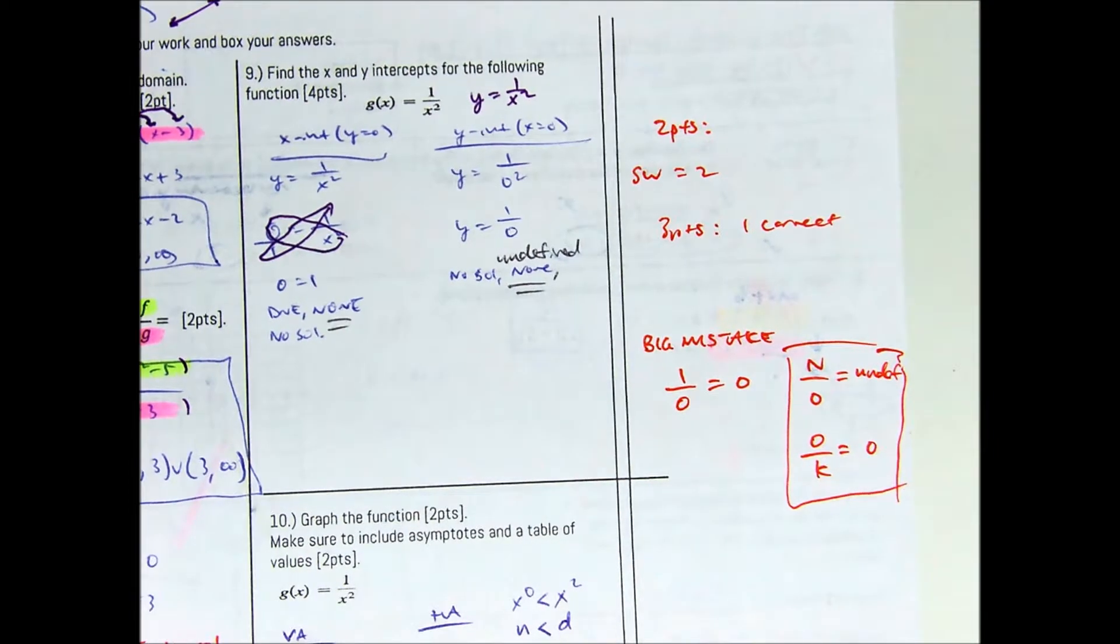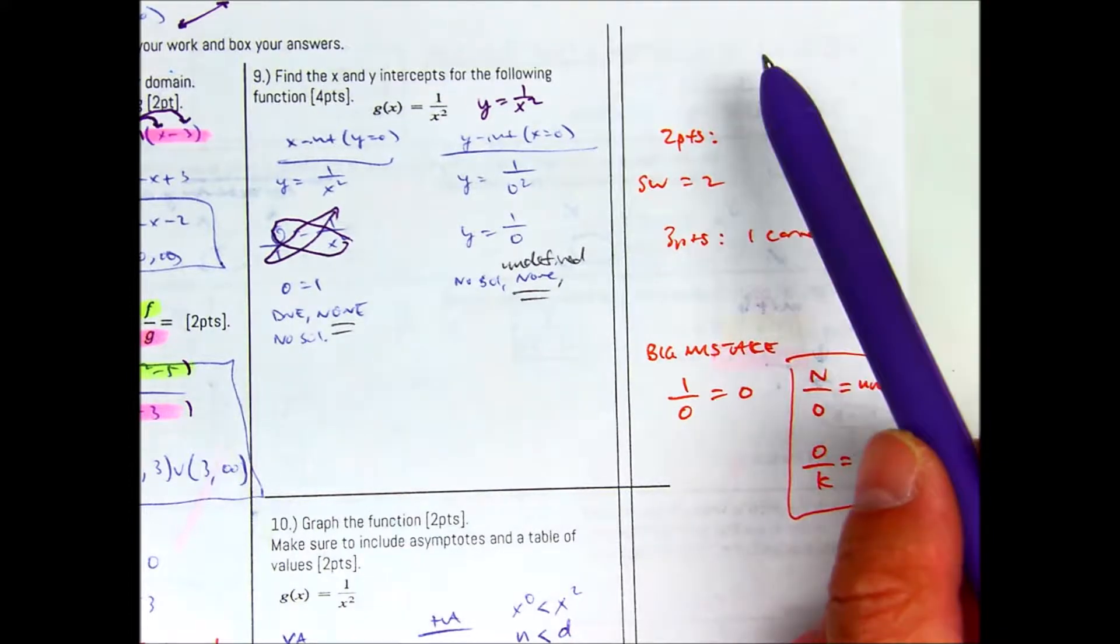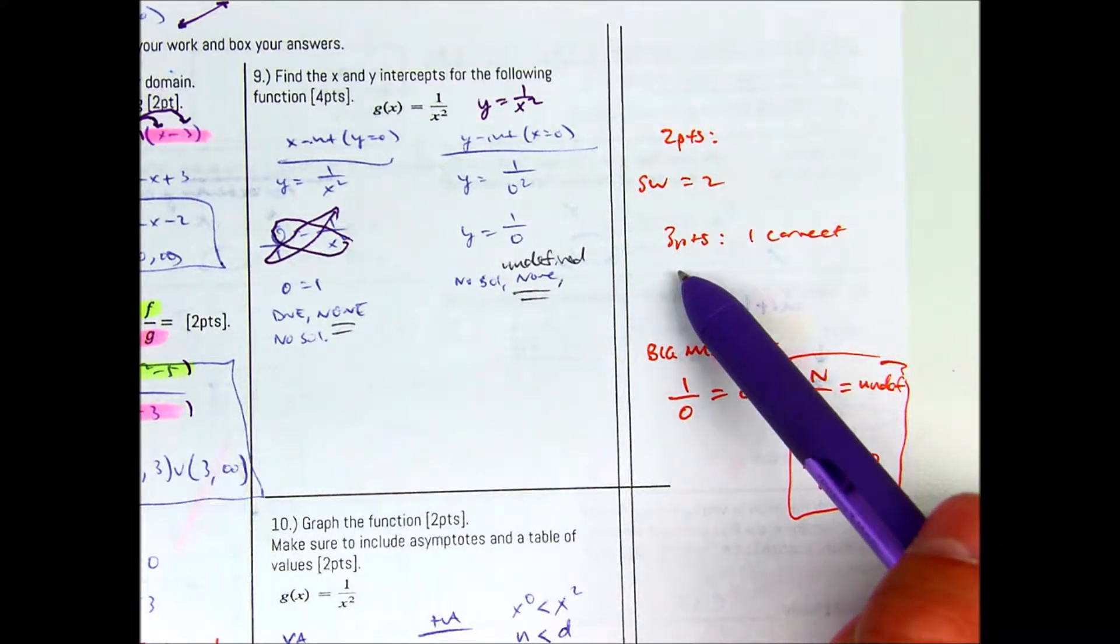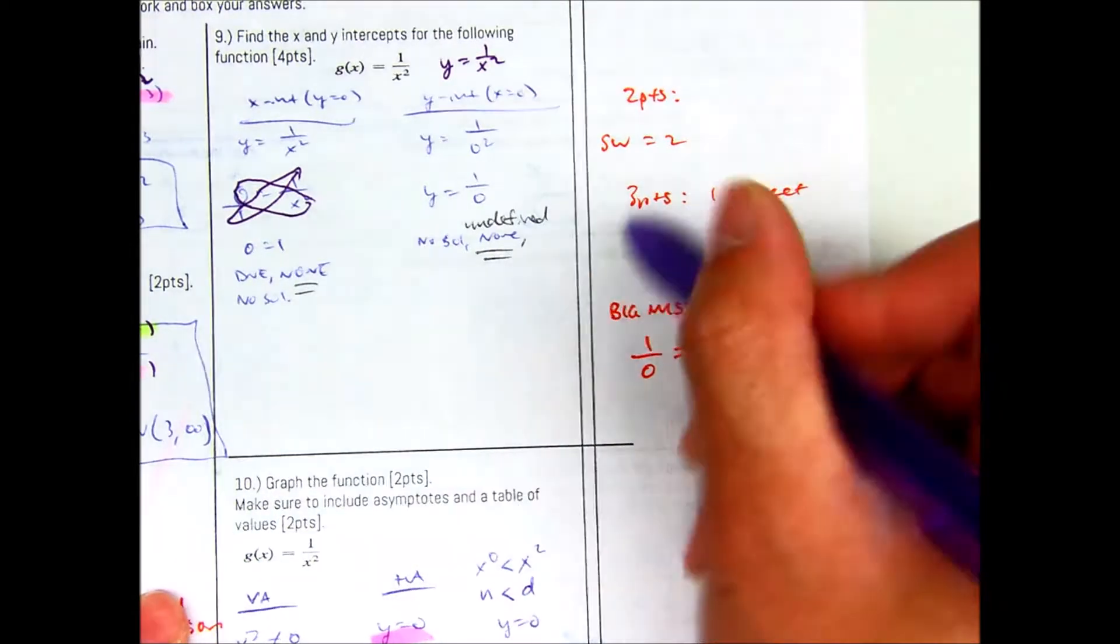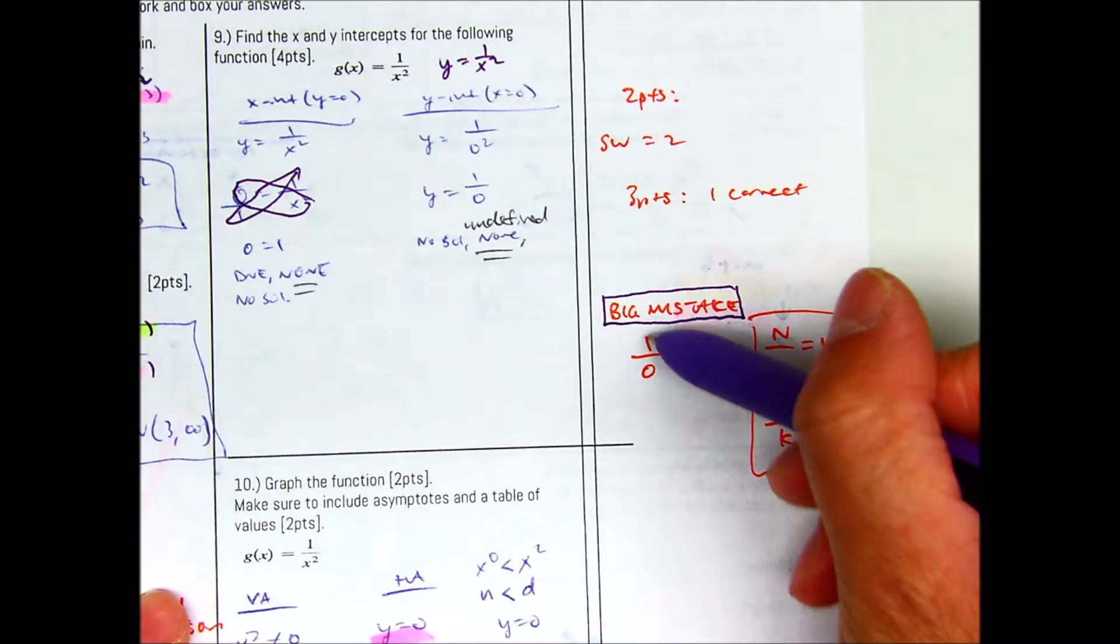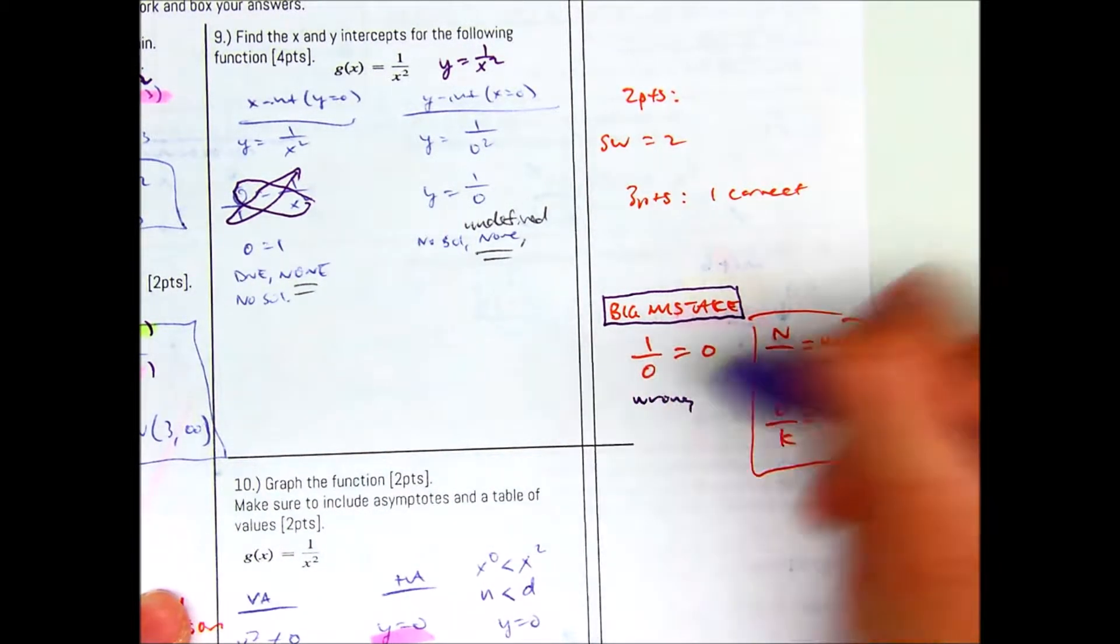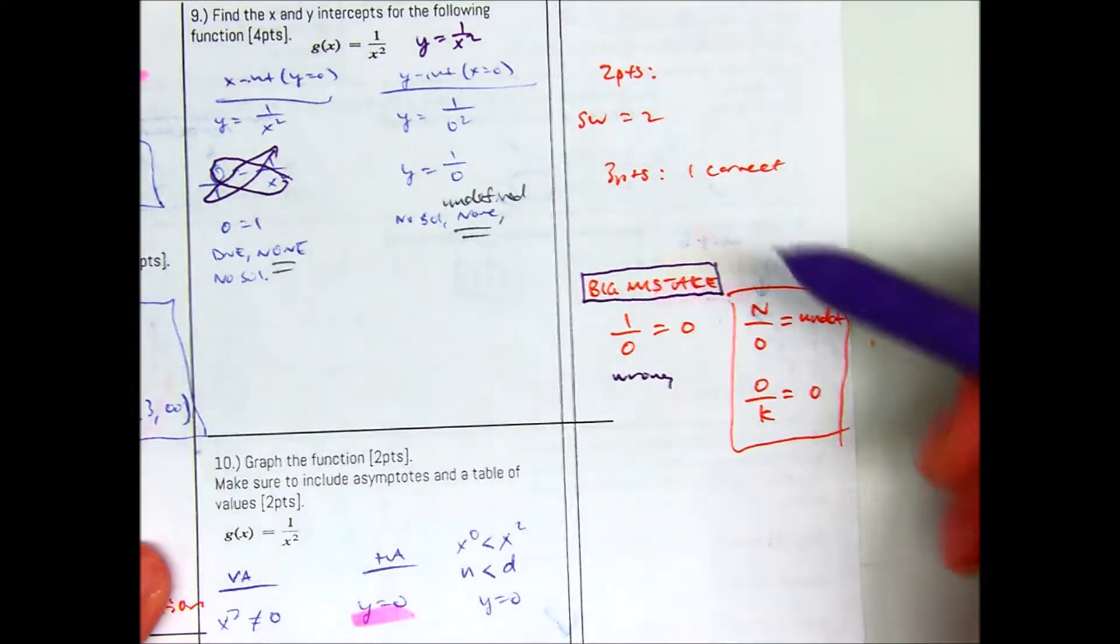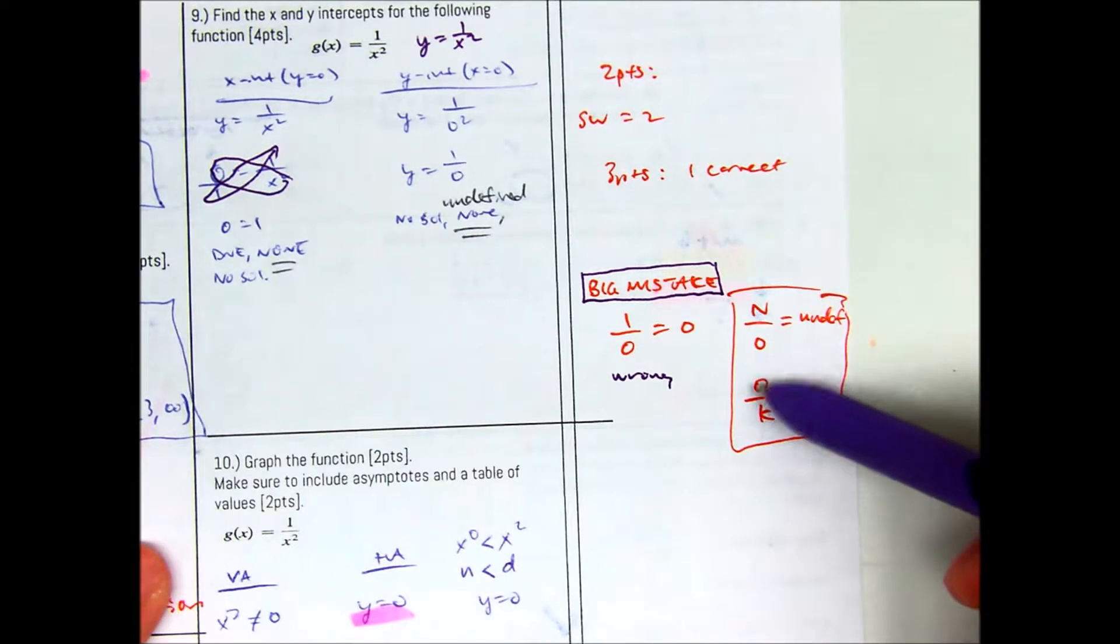Two points. Remember, SW means to show your work. I gave you three points if you have at least one of your intercepts correct. Big mistake that students are making. Make sure you have that on your notes or formula sheets. 1 divided by 0 is not 0. That's wrong. Remember, something like a variable divided by 0 is undefined. But if your 0 is in the numerator, 0 divided by anything is equal to 0. That is okay.